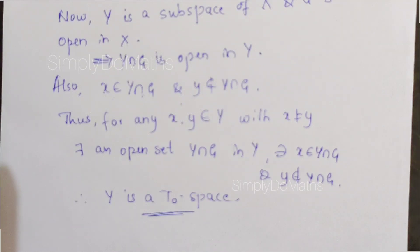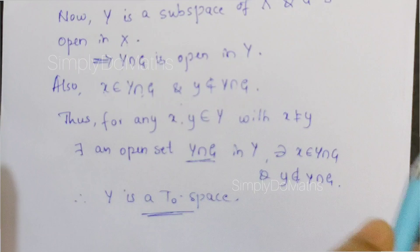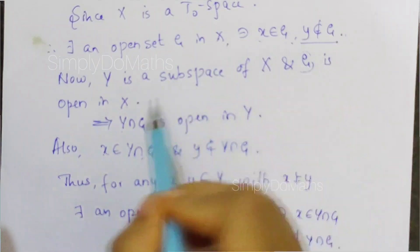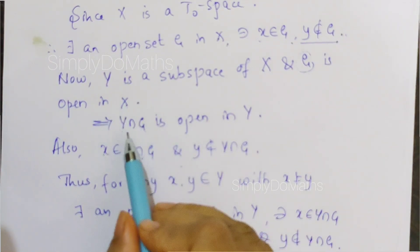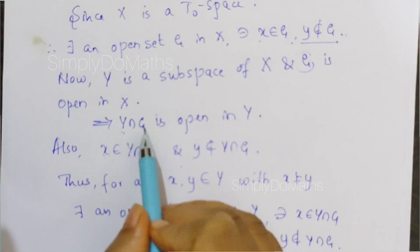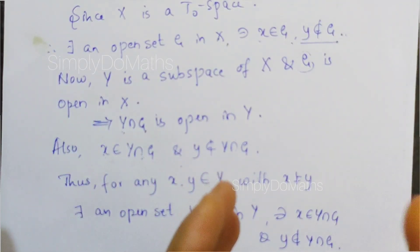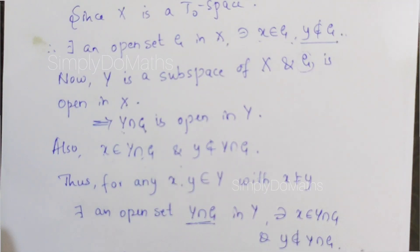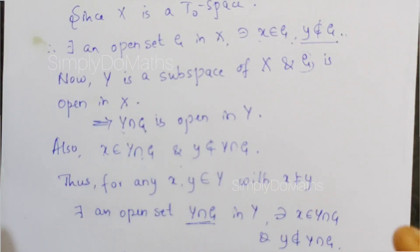Remember: when proving the hereditary property or subspace property of a topological space, you need to consider Y intersection G as the open set. G is an open set in X, but we need an open set in Y. So we restrict G to Y by taking Y intersection G. In all theorems of this type, we follow this rule of taking the common open set in Y.